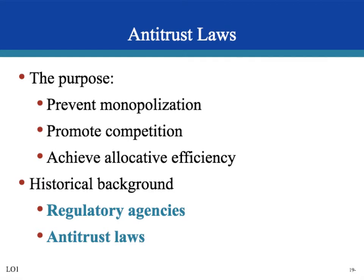Consumers started to get very unhappy and went to the government demanding change. With this pressure, regulatory agencies were started. If a firm was a natural monopoly, the regulatory agency would establish laws to control the behavior of the monopolist and make sure the price was fair for consumers. Antitrust laws were also started, with the goal of preventing the monopoly from gaining more power.